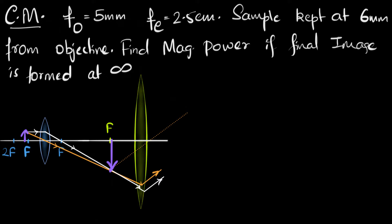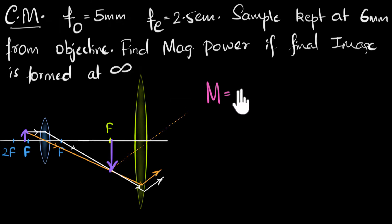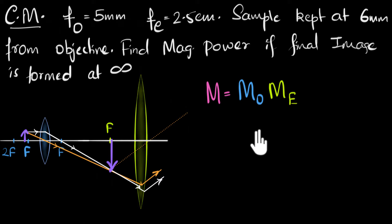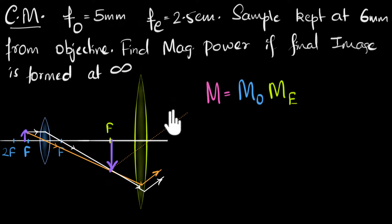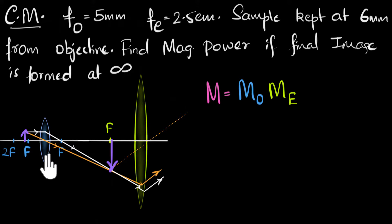The magnifying power of a compound microscope is the linear magnification produced by the objective multiplied by the magnification produced by the eyepiece. If you need more clarity on this, it would be a great idea to go back and watch the previous video. To find the magnification of the objective, we just need to figure out the ratio of image height to object height.